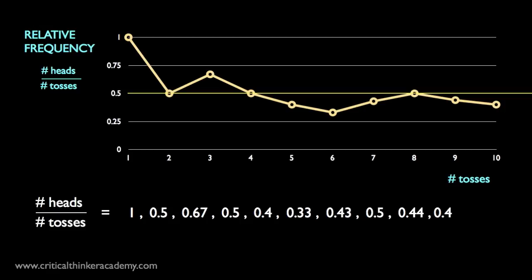But what's distinctive about frequency interpretations of probability is that they want to identify probabilities with relative frequencies. On this interpretation, to say that the probability of landing heads is 1 half is just to say that if you were to toss it, it would generate a sequence of relative frequencies like this one. Not exactly like this one, but similar.